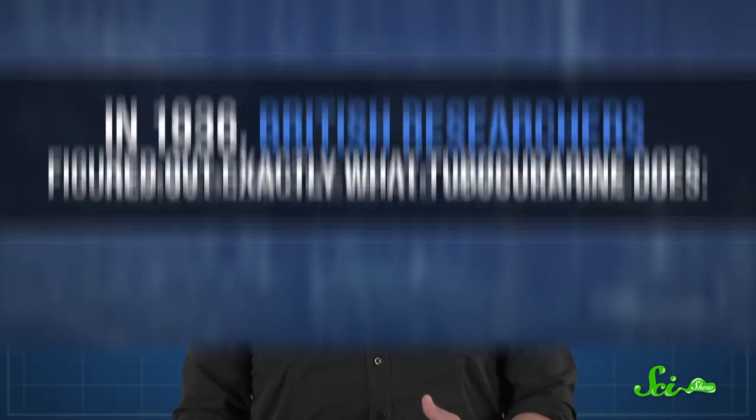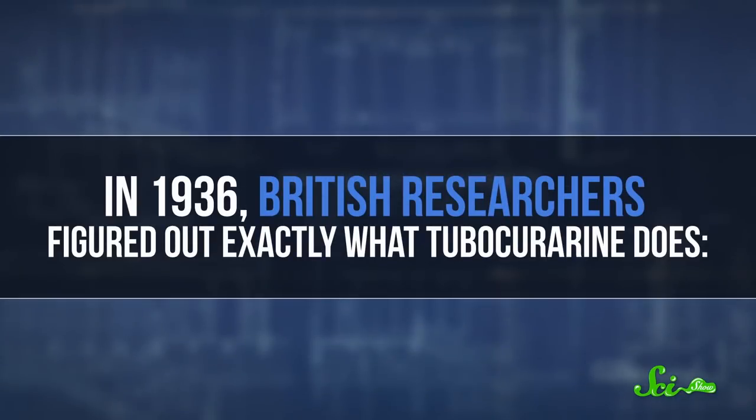Because tubocurarin is a bulky molecule, it can't be absorbed through your digestive system like some of these other alkaloids. It needs to get into your bloodstream directly to do anything. And in 1936, other British researchers figured out exactly what tubocurarin does.